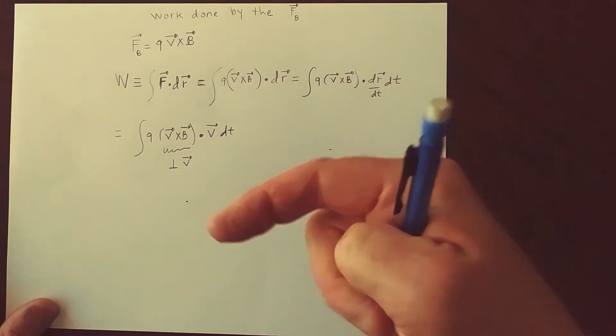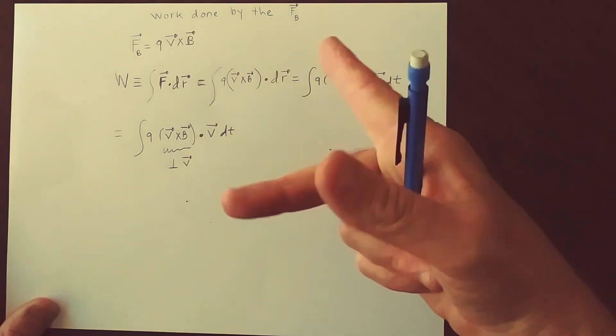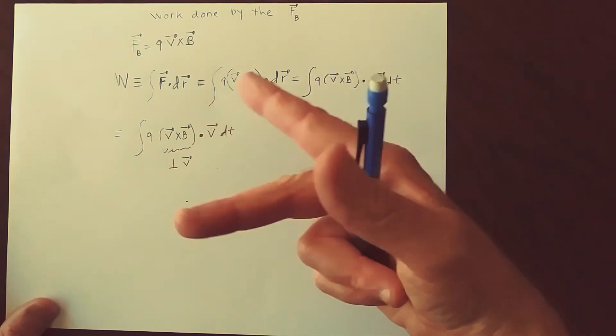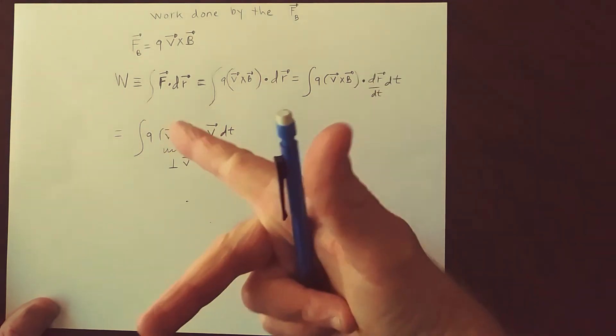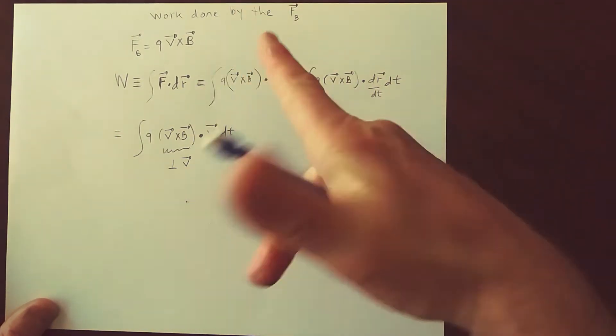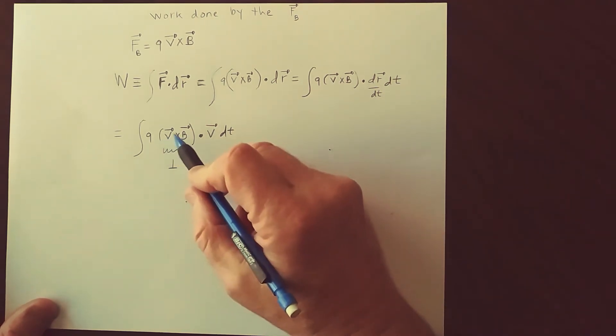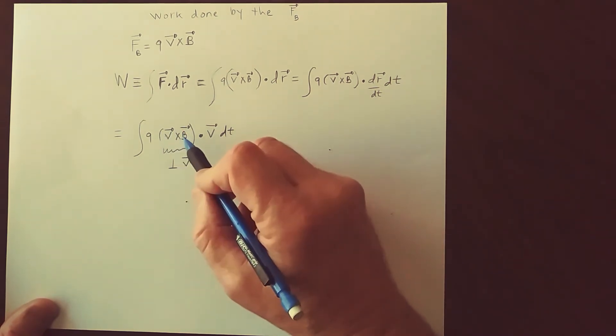Velocity and magnetic field can have any direction, and the vector is not zero if they're not aligned or anti-aligned. But what you get is the thumb, and the right-hand rule says that the result is a vector that's perpendicular to V and B.